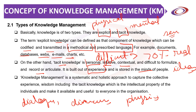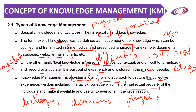Knowledge management is a systematic and holistic approach to capture tacit knowledge — the collective experience and wisdom — in which the intellectual property of individuals can be categorized and made available and useful to everyone in the organization. How we can manage and utilize that mental knowledge depends upon the approach used under knowledge management.